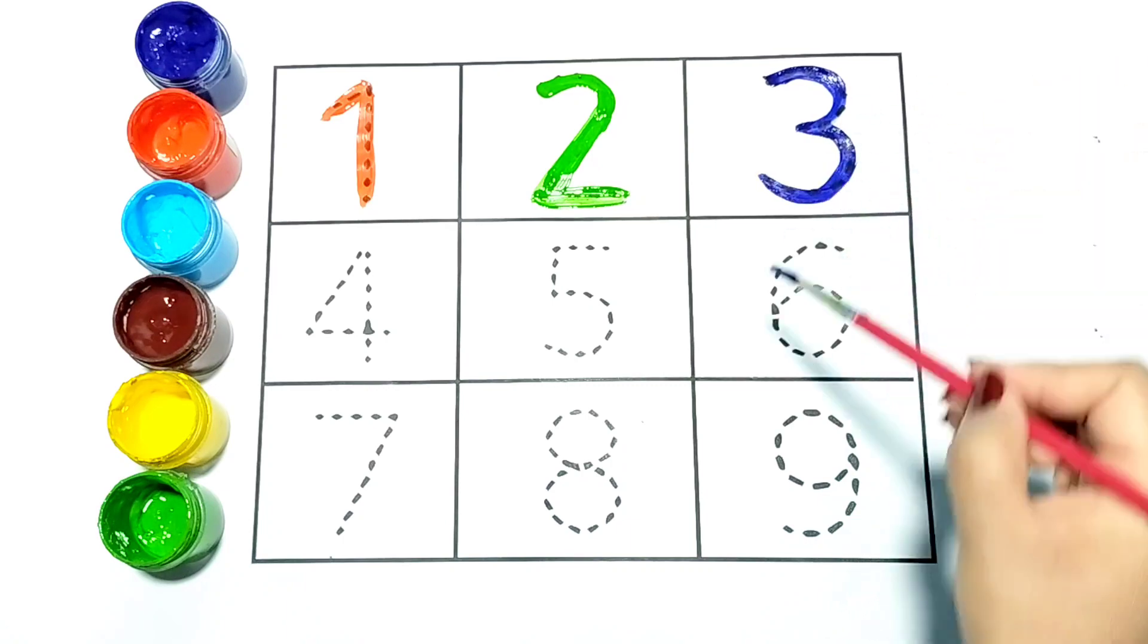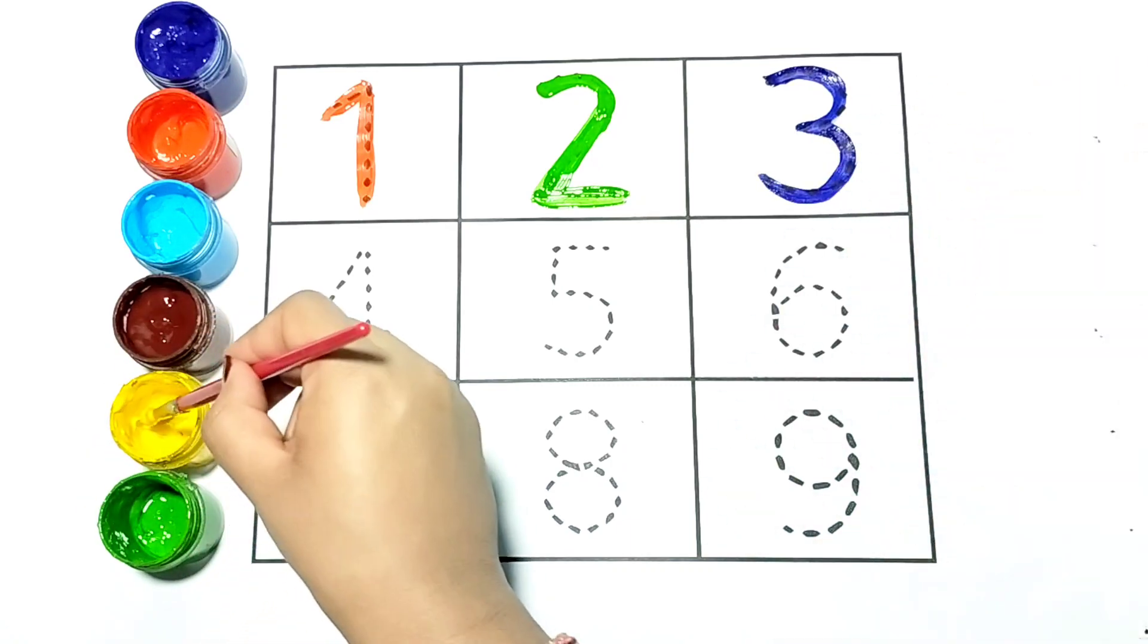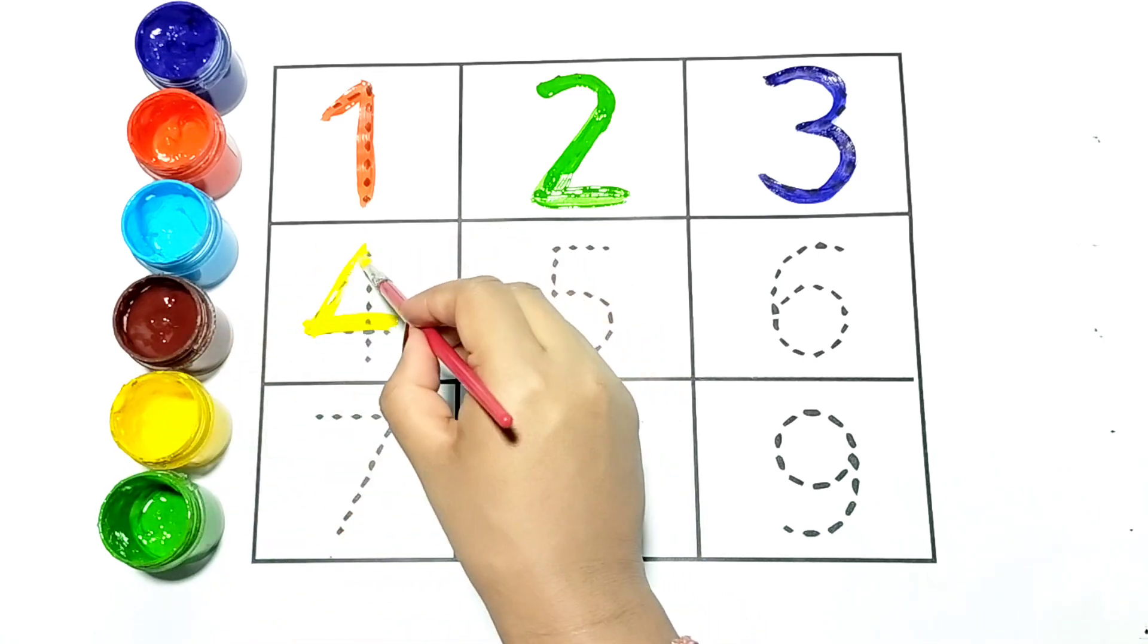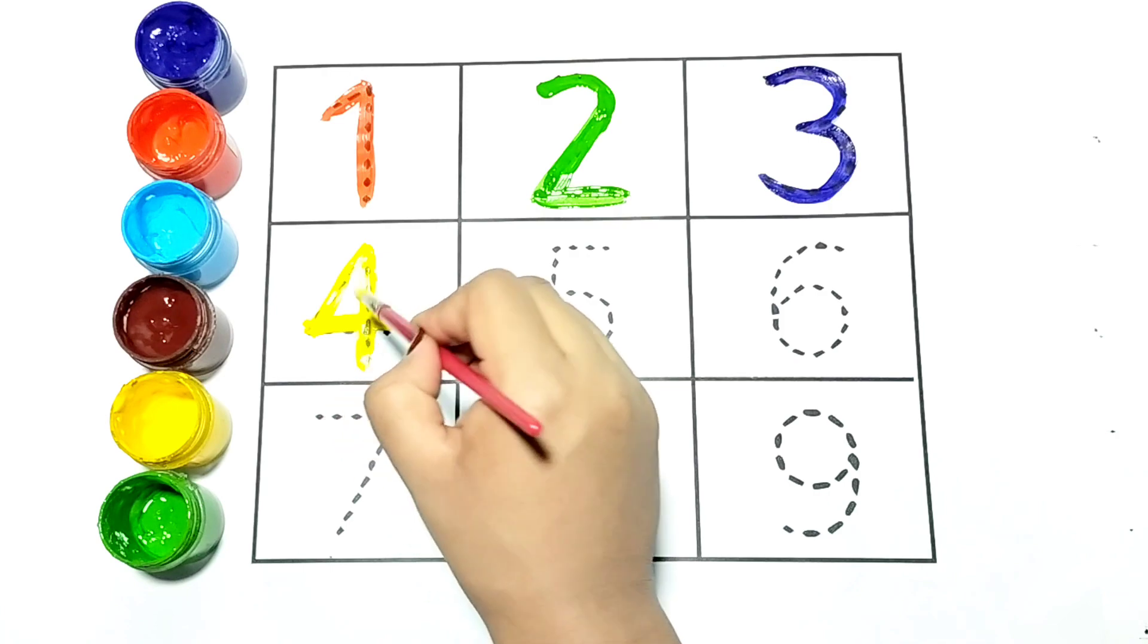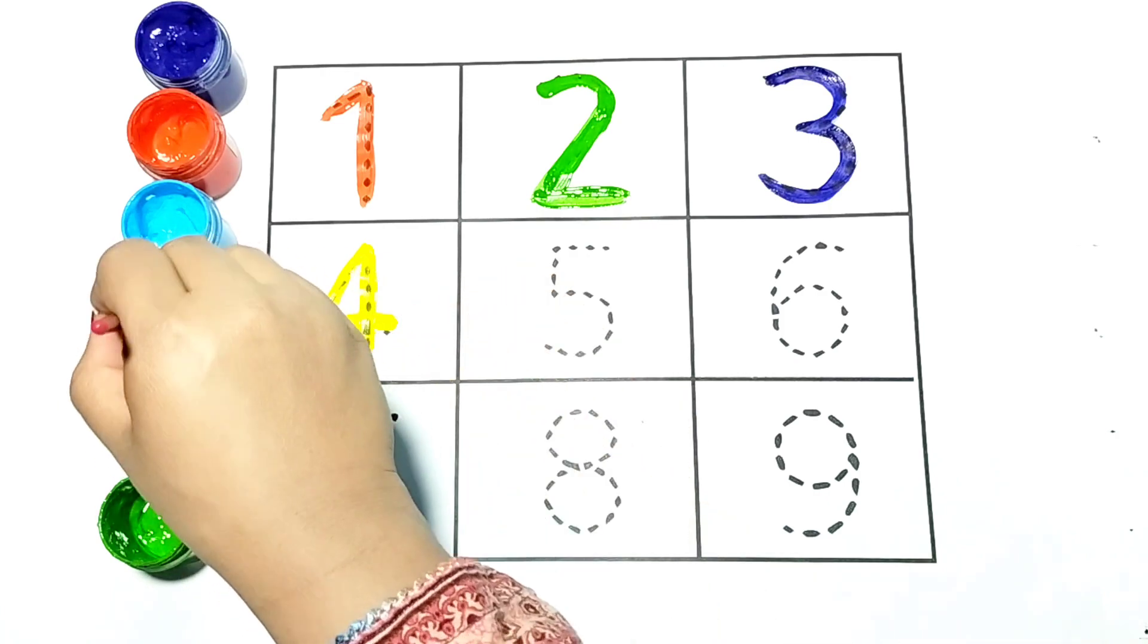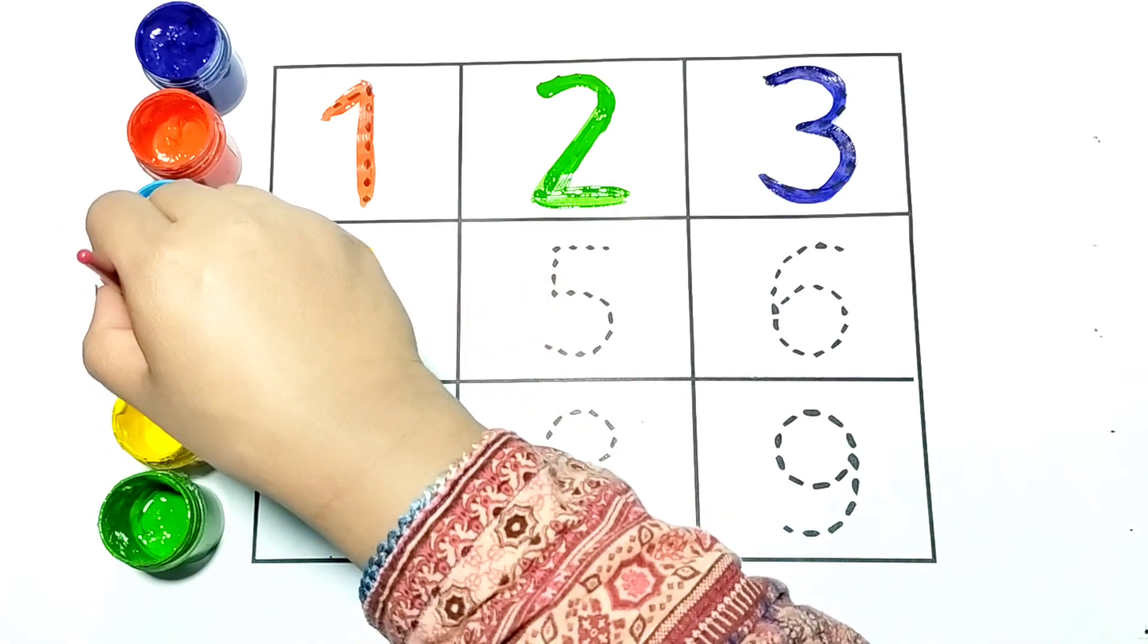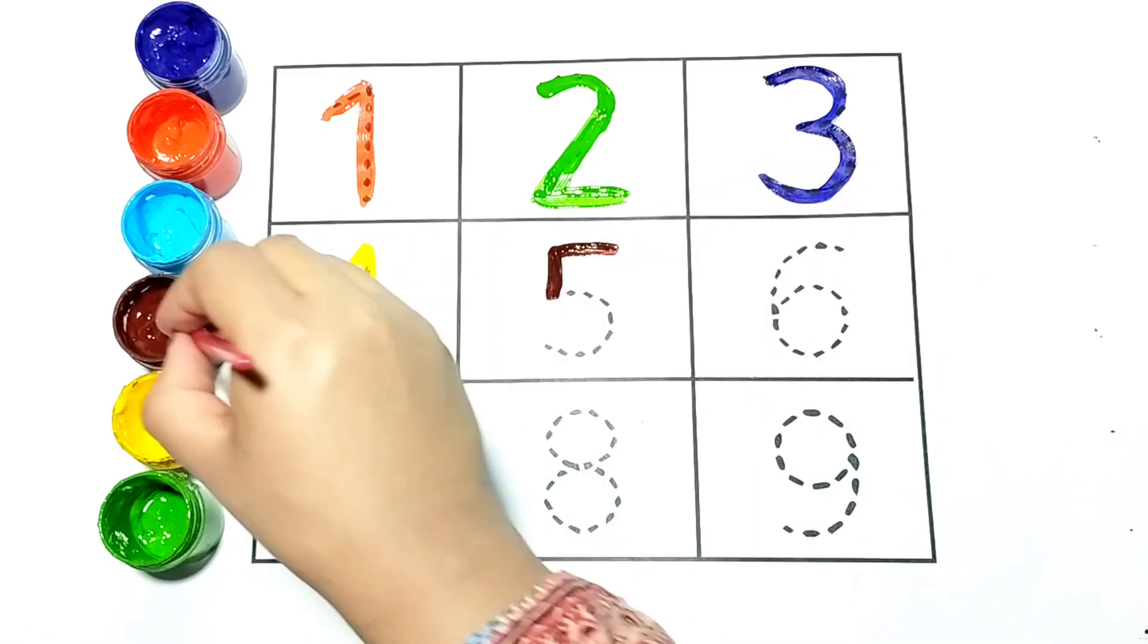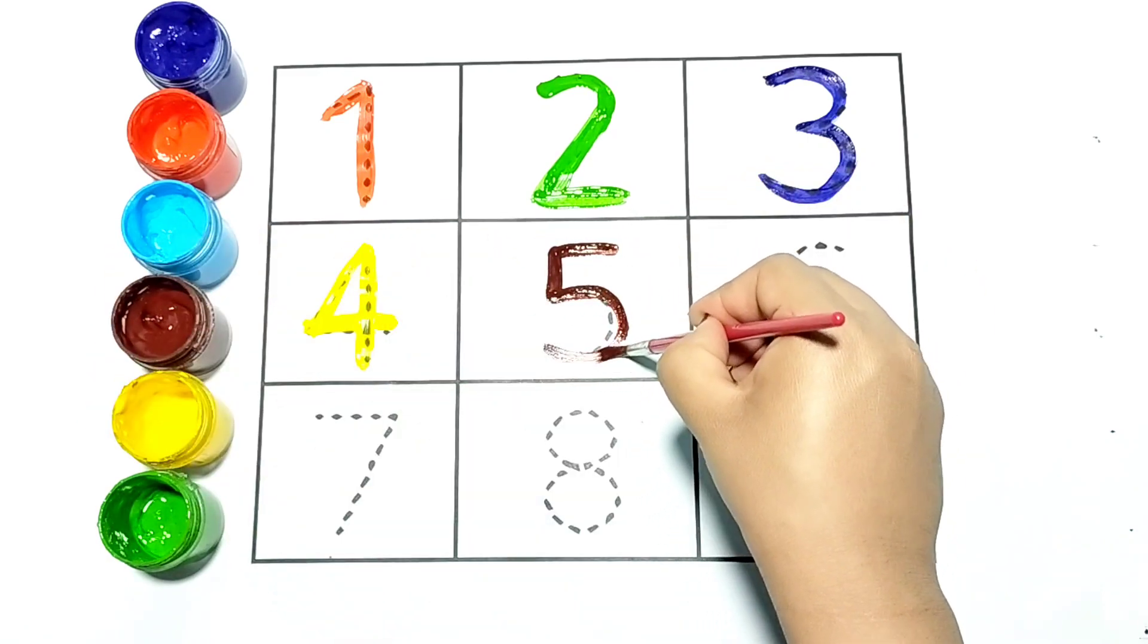Do you know the next number? It is number 4. It is in yellow color. Next number is 5. Kids, repeat with me. It is number 5.